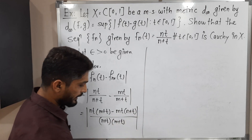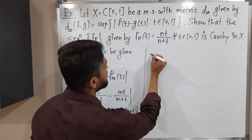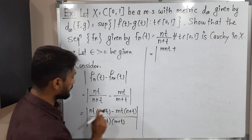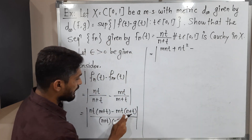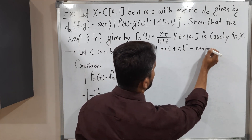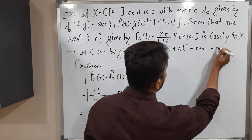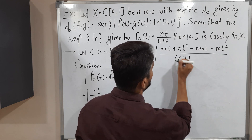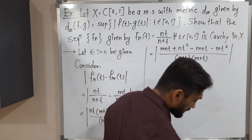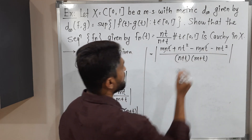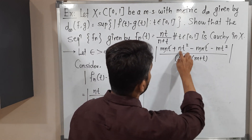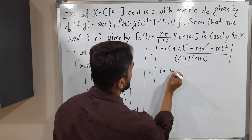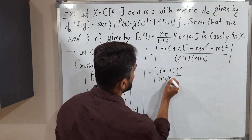I need to solve those brackets — I hope some terms will get cancelled. Mod of [MNt + Nt² minus MNt minus Mt²] divided by (n+t)(m+t). So MNt minus MNt will get cancelled. Two terms remain: Nt² minus Mt². We can take t² common: mod of (N minus M)t² divided by (n+t)(m+t).